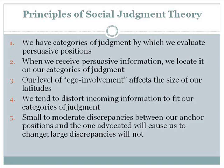The theory is fairly easy to understand and is based on five key principles. Principle 1: we have categories of judgment by which we evaluate persuasive positions. Principle 2: when we receive persuasive information, we locate it on our categories of judgment. Principle 3: our level of ego involvement affects the size of our latitudes. Principle 4: we tend to distort incoming information to fit our categories of judgment. Principle 5: small to moderate discrepancies between our anchor positions and the one advocated will cause us to change. Large discrepancies will not.